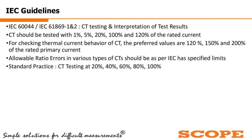IEC 61869-1 and -2 specifies allowable ratio errors and accuracy limits. For standard practice, CTs can also be tested at 20%, 40%, 60%, 80%, and 100% of rated current. These are the standard test practices.